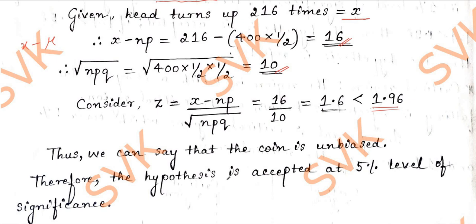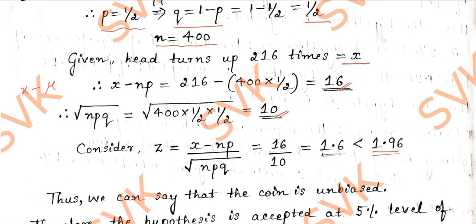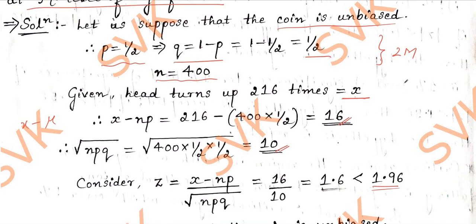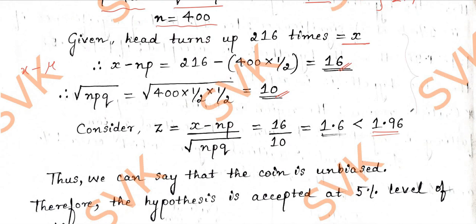This is how we need to solve the given problem. See the marks distribution for this. For finding out P and Q, as the question carries 7 marks, for P and Q and N, it may carry 2 marks. For solving for X minus NP and the remaining formula, solving all these carries 4 marks weightage, and finally giving the conclusion carries 1 mark. Therefore, 4 plus 3 will be 7 marks will be awarded for this question.